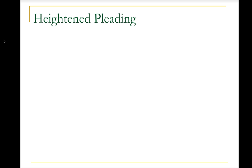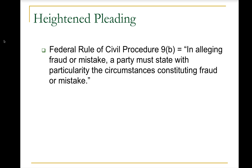The idea of heightened pleading is that in contrast with notice pleading, which requires only enough information to put the defendant and other parties on notice of what the claims are, in some circumstances something more than that should be required. The source of law providing for that requirement is Federal Rule of Civil Procedure 9(b), which says that in alleging fraud or mistake, a party must state with particularity the circumstances constituting fraud or mistake. This is by contrast to Rule 8, which says that to state a claim for relief a plaintiff need only state a short and plain statement of the claim showing that the pleader is entitled to relief. Rule 9(b)'s heightened pleading standard applies only to fraud or mistake.